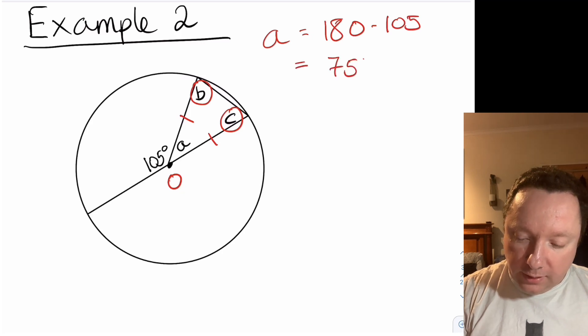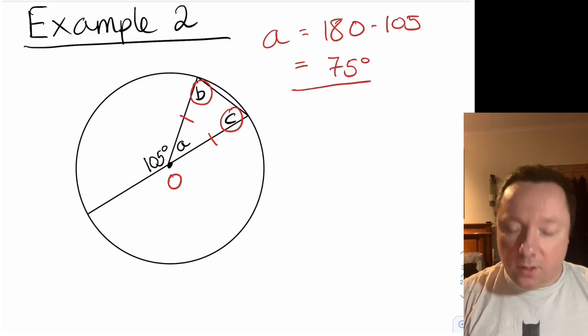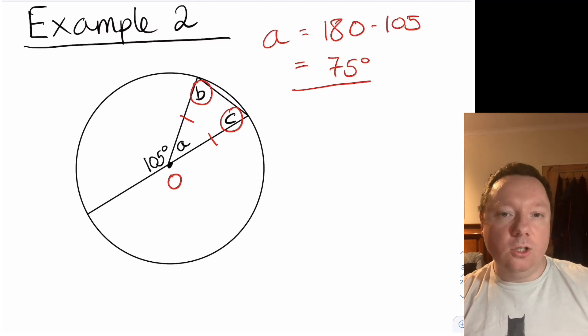Which is 75 degrees. And now that I've got a, I can work out b and c because angles in a triangle add up to 180.